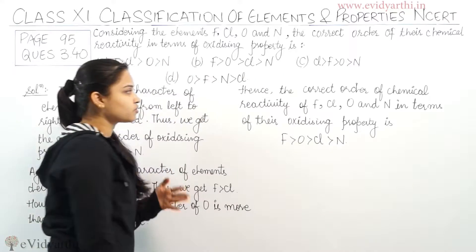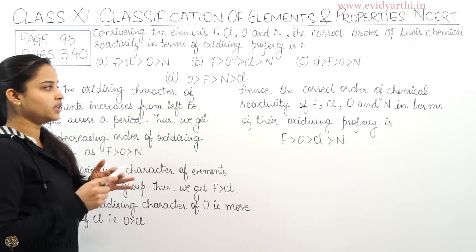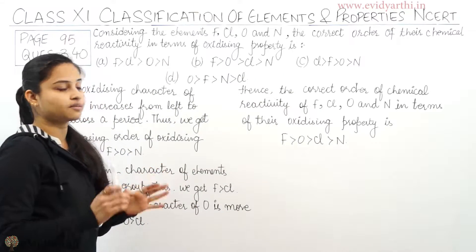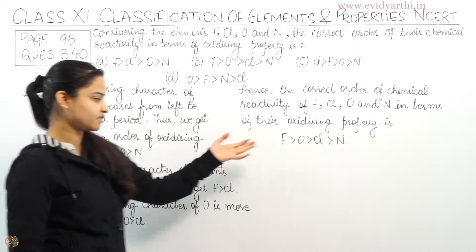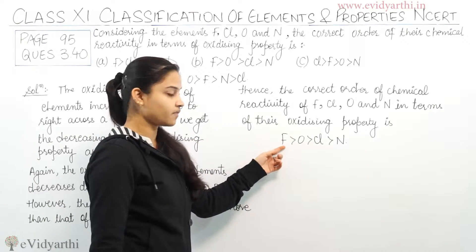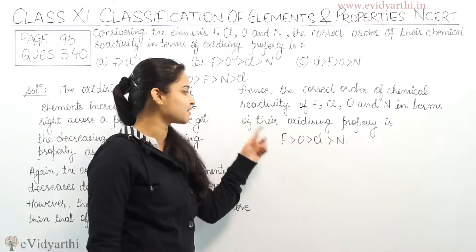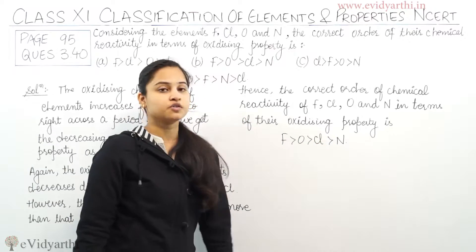So the correct order of chemical reactivity of fluorine, chlorine, oxygen, and nitrogen in terms of their oxidizing property is: fluorine has the highest oxidizing character, then oxygen, then chlorine, and then nitrogen.